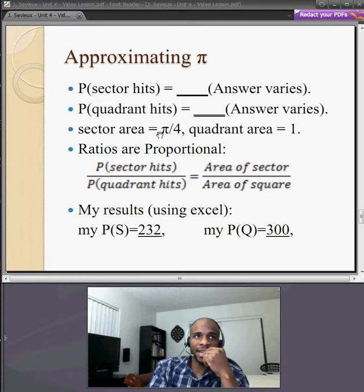The sector area that we have is pi over 4, and the quadrant area is 1. Now, consider how these ratios are proportional.